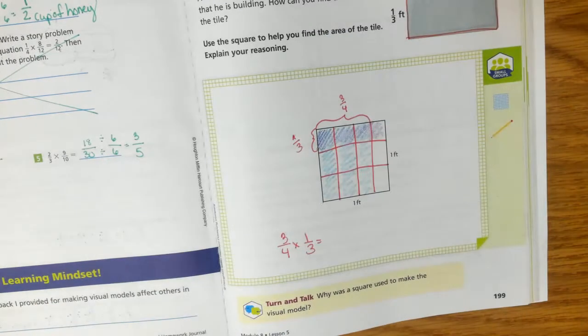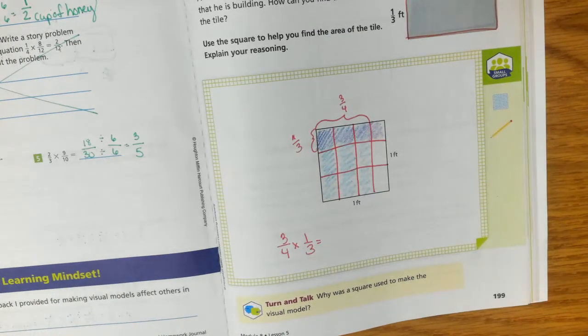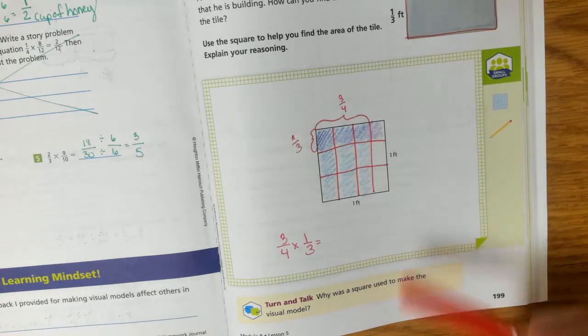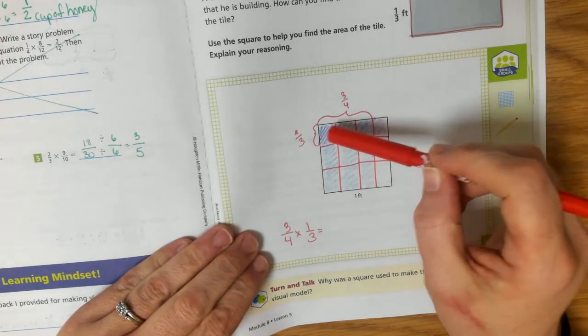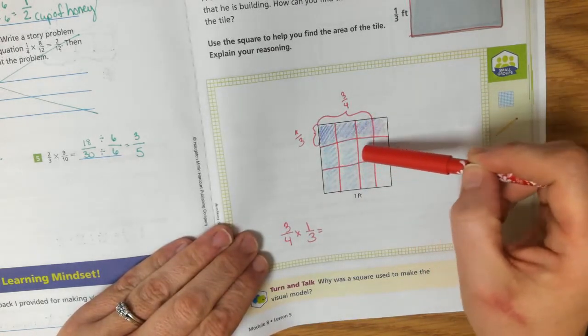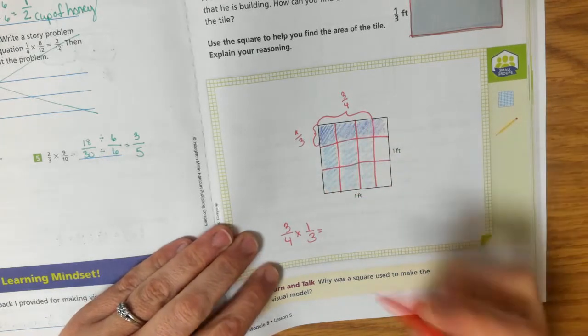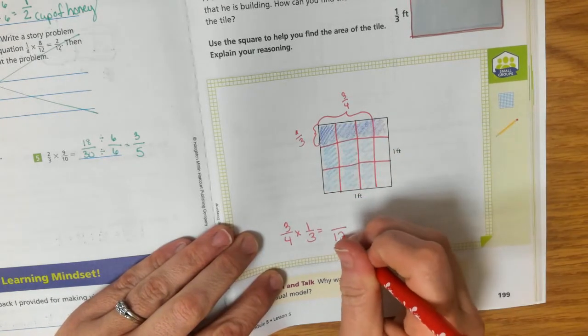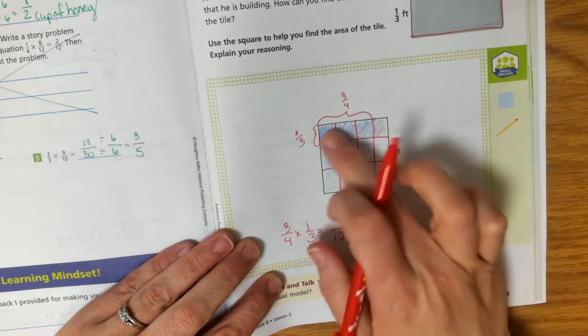Now, I need to break it up in the other direction into thirds because I have one third. So I'm going to break up my square into thirds now. And basically, this is going to give us a visual. This is going to hopefully help you understand why this works the way it does. And I'm going to use purple to shade in our one third. So here is our one third. Now, what we can see is how many total pieces did this get broken up into? One, two, three, four, five, six, seven, eight, nine, ten, eleven, twelve. So we have twelve total pieces.